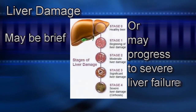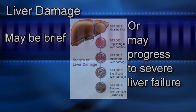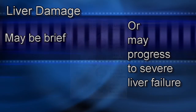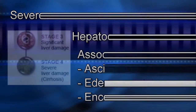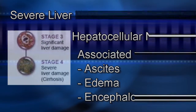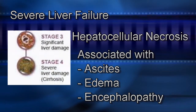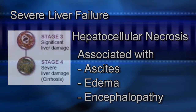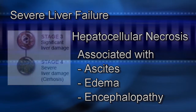Isoniazid-induced hepatitis can be brief or may progress with development of severe liver failure and massive hepatocellular necrosis. These latter cases may be associated with ascites, edema, and encephalopathy.